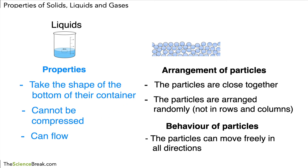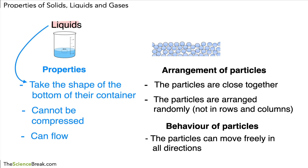So let's explain a property: liquids cannot be compressed because the particles are close together. Another example: liquids can flow because the particles can move freely in all directions. Again, see how we're linking the property to either the arrangement or the behavior of the particles. So we can say: liquids take the shape of the bottom of their container because the particles can move freely in all directions.